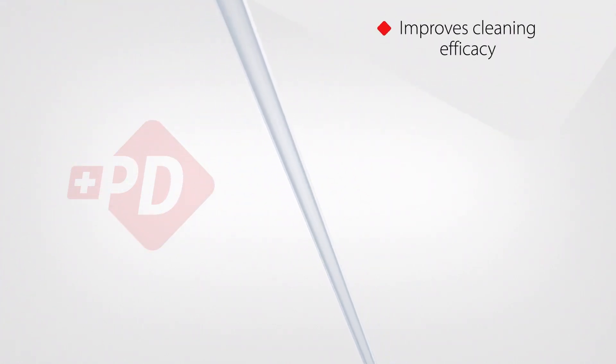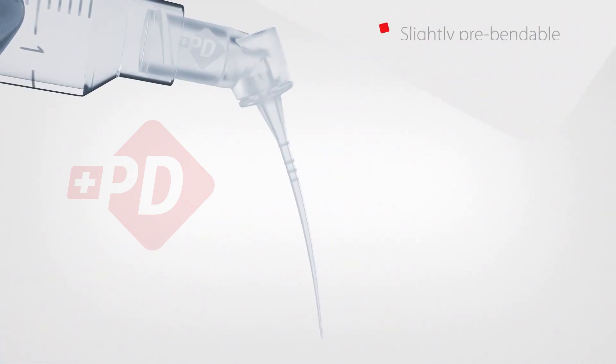The unique closed-ended two-side vent needle design delivers solutions as close to the apex as possible. The horizontal flow and the specific taper increase the shear stress effect in the entire root canal system for more efficient cleaning results.